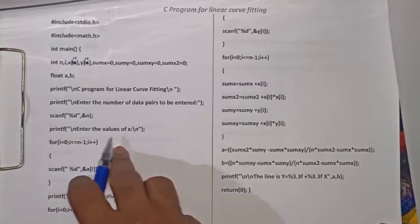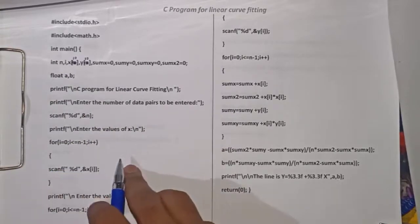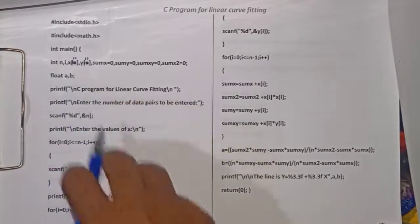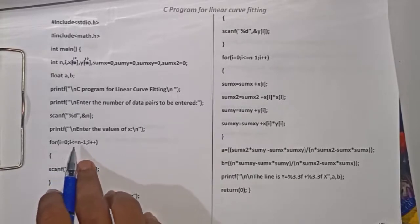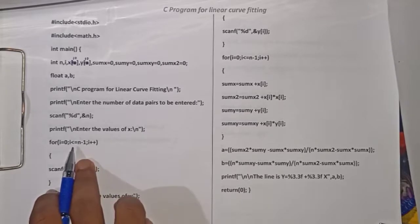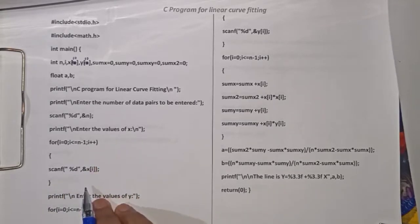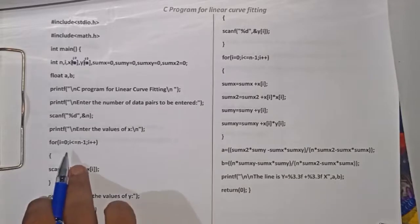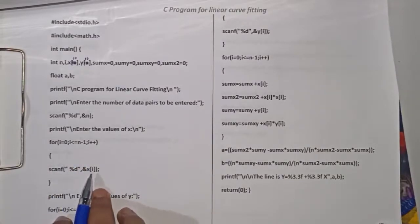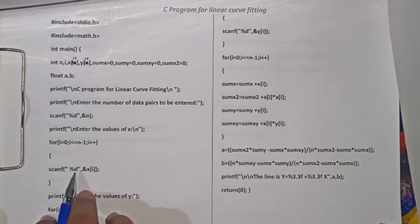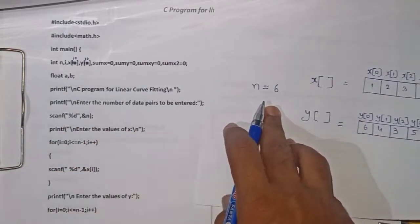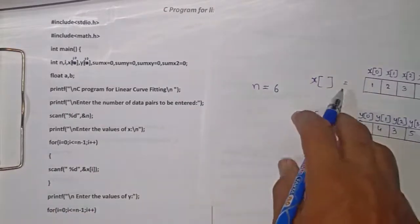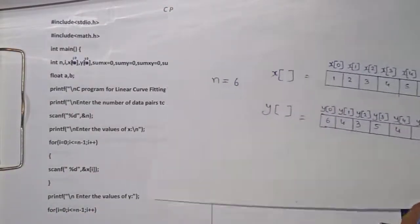This printf will print 'enter the values of x', and this for loop is used for reading the values of x and storing them in array x. Initially i is initialized to 0 and this for loop will be executed until i is less than or equal to n-1. scanf reads the value from the user and puts it in x[i]. Assume that we have entered n equals 6 and we are now reading the values for array x.